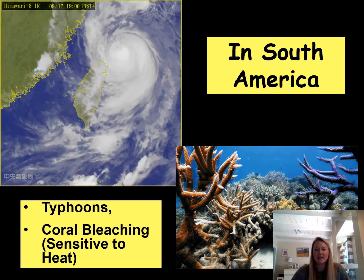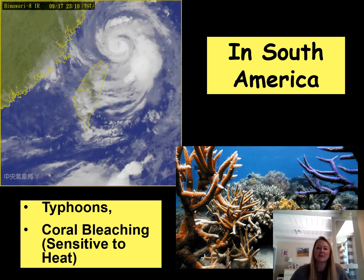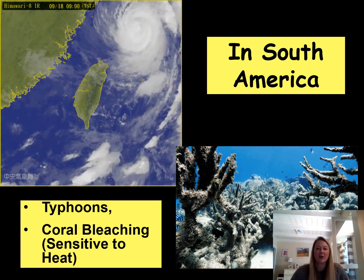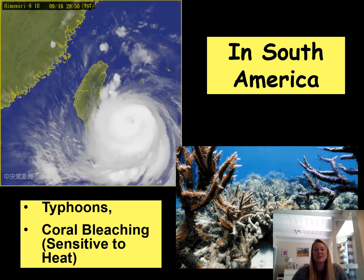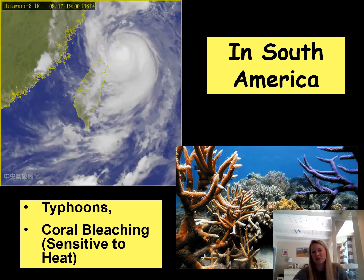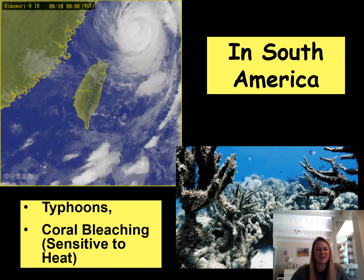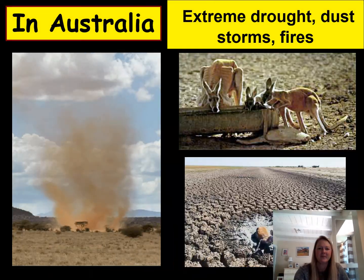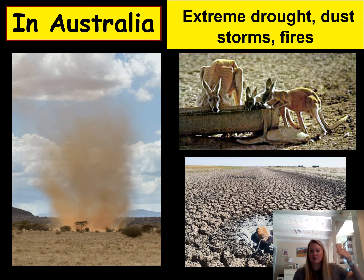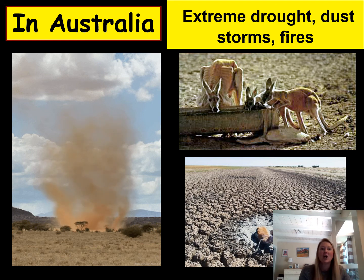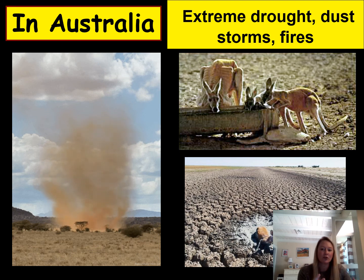El Niño also produces more typhoons — essentially hurricanes on the Pacific side — because the water is much warmer. Coral bleaching also occurs, as coral is very sensitive to heat and warmer water can cause its death. In Australia and the West Pacific, the opposite problem occurs: they're deprived of precipitation that the winds would normally deliver, resulting in extreme drought and dust storms.